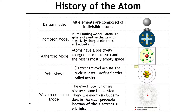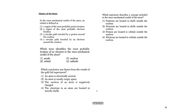One more thing: the wave mechanical model is the one we have today. It tells us that electrons are in something called an orbital. The orbital is the most probable location of an electron — meaning we don't know the exact location, but it's most probably in the orbital.